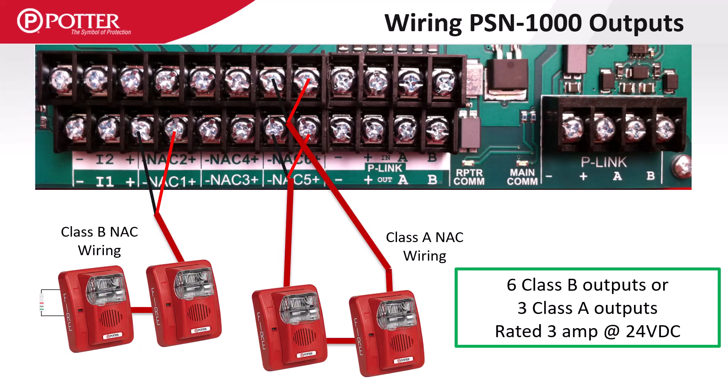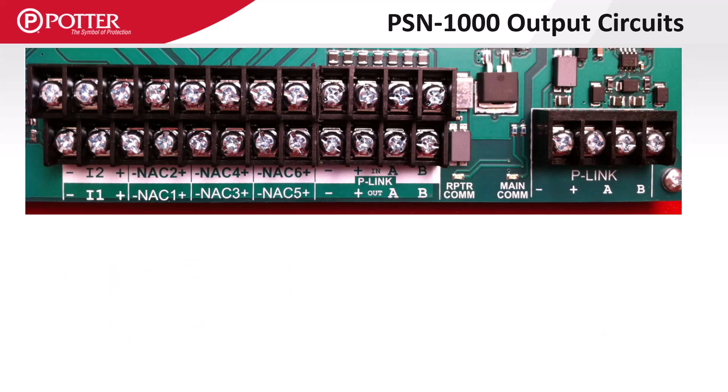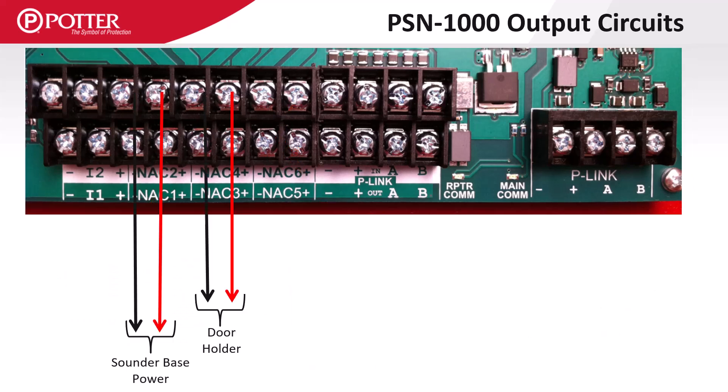The outputs on a PSN1000 have the same 3A circuit rating as a control panel. The power supply provides six Class B or three Class A outputs, which are independently configured using the programming software. Just like on the control panels, each output is independently configurable.